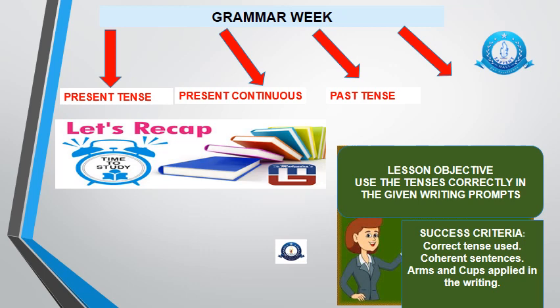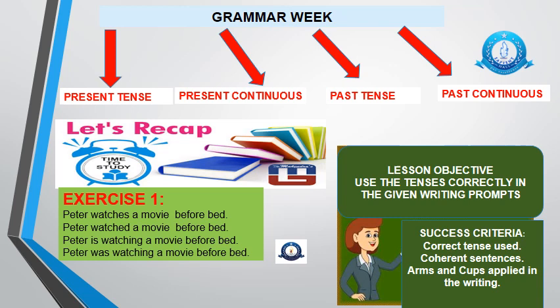Past tense — happened in the past. It's finished, ended, gone. We use -ed with our verbs, but not with irregular verbs. Past continuous: an action that was in progress in the past, an ongoing past action, interrupted at some point. We don't know when. The auxiliary verbs used are was and were, and we use the present participle.